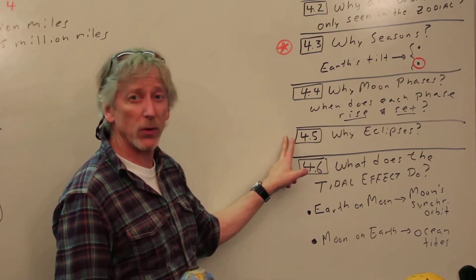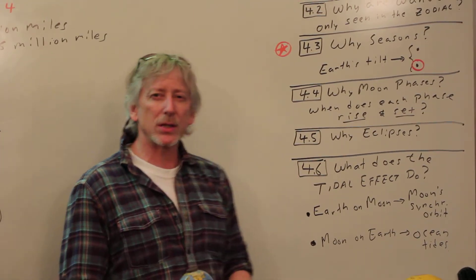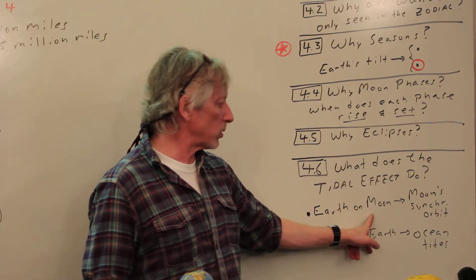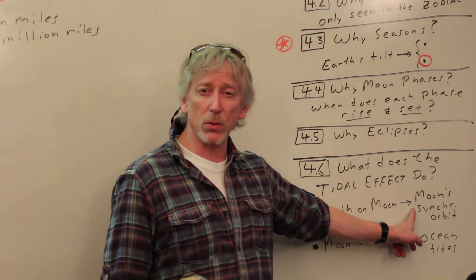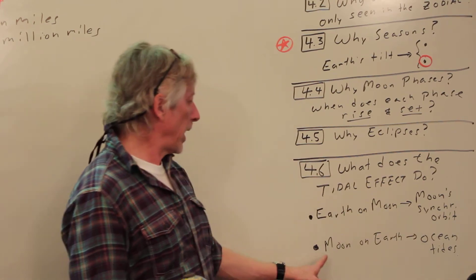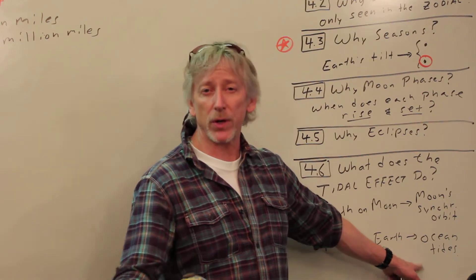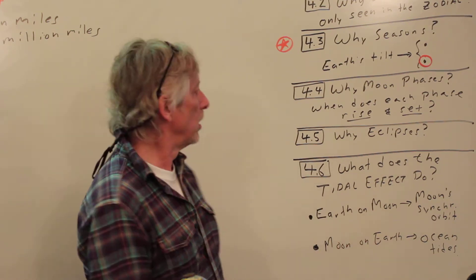4.5: Why are there eclipses? 4.6: What does the tidal effect do? What does Earth do on Moon? Well, it creates Moon synchronous orbit. We'll talk about what that means. And what does Moon do on Earth? Well, it creates ocean tides. That's the main tidal effect. The tidal effect does a lot more than that.